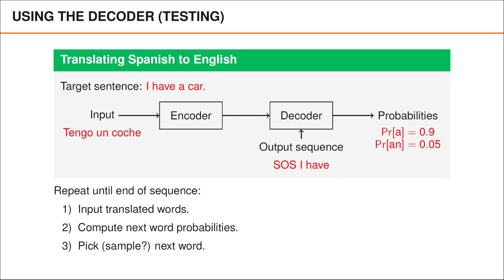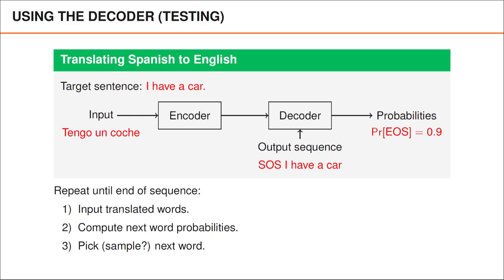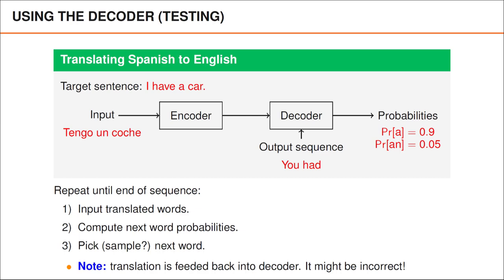If we select 'have' as the next word, we can then feed 'I have' into the decoder and again ask it to predict the probabilities of the next word. By repeating this process, we can translate one word at a time. If things go well, we might end up producing the correct translation 'I have a car,' and then finally predict the end of sequence token, which marks that the translation is completed. It's important to note that we feed whatever translation the network gives us back into the decoder. For instance, if we were to start our translation with the words 'you had,' this is what we would feed into the decoder, even if the correct translation is something else, since the correct translation is generally unknown to us.